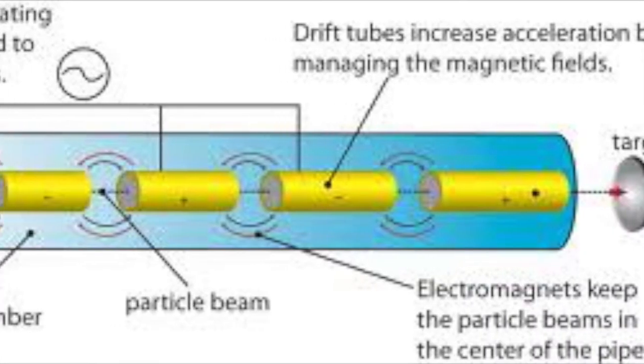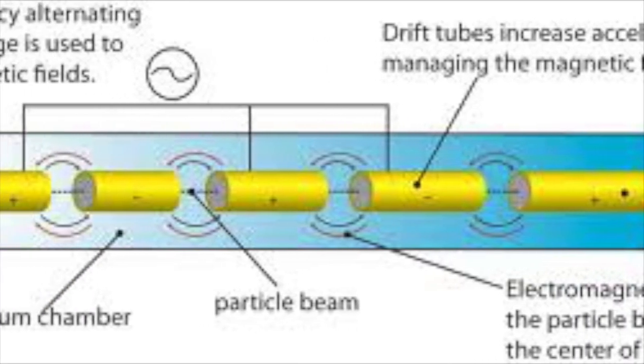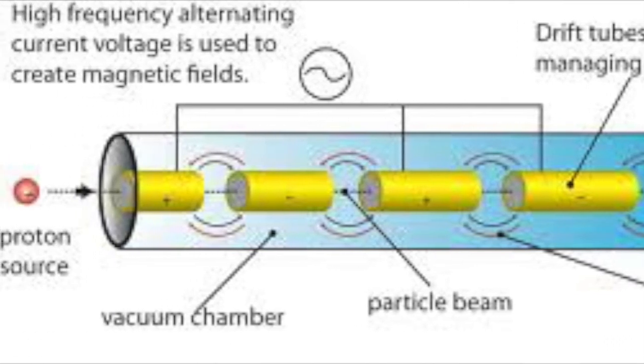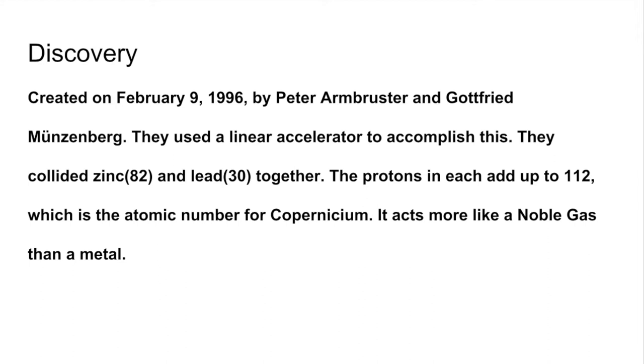A linear accelerator is a type of accelerator that charges particles and then accelerates them through a linear beamline. This machine was created by Rolf Weiderdell in 1928.